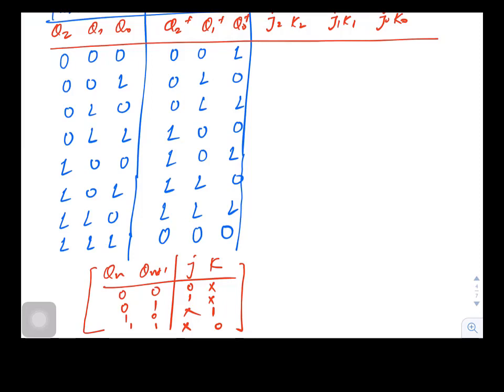But I will not be telling you here how we do it. Now just look at this table and complete all these columns. Again, like we have done in the previous case, if we want to calculate J2 K2, then we have to look for Q2 and Q2+.